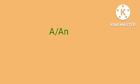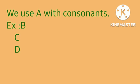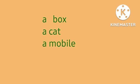Hello everyone, today we will learn 'a' and 'an'. We use 'a' with consonants. Examples: a bob, a cat, a mobile.